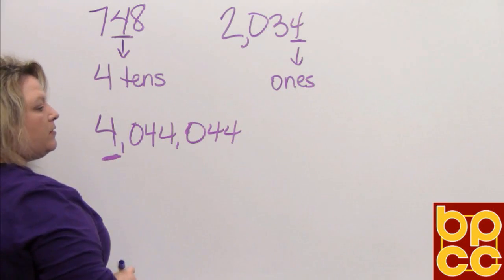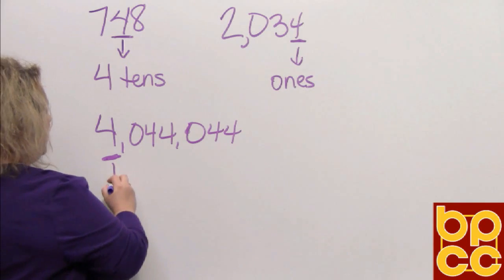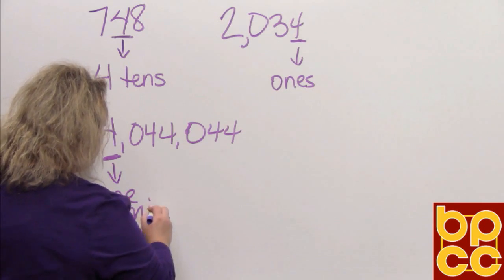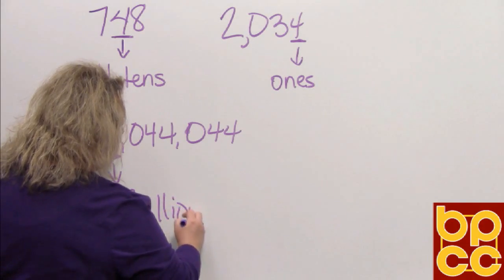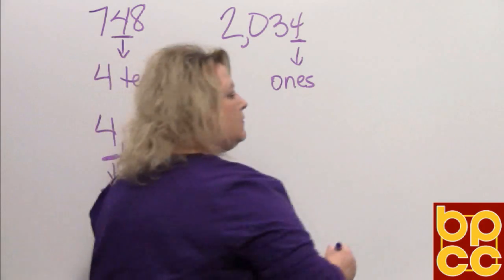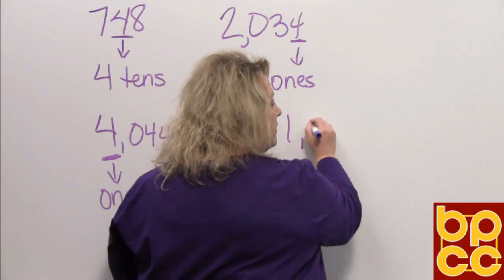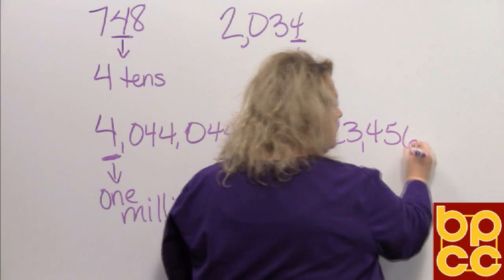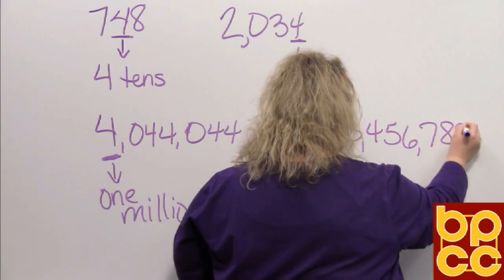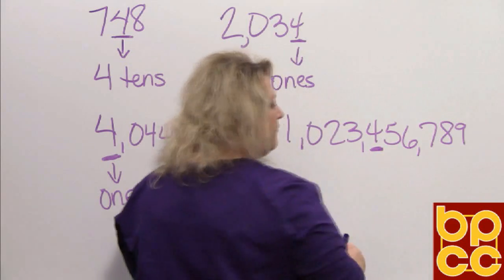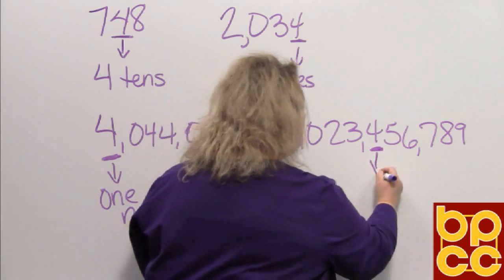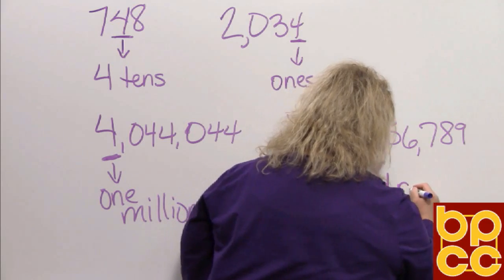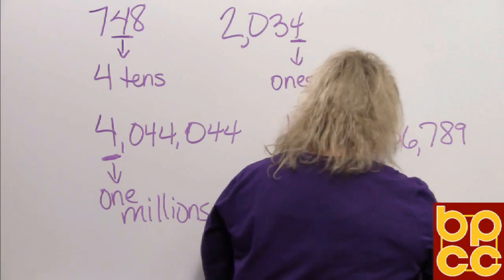And this next number, the digit that is underlined is in the one million place. And the next one, that four is in the hundred thousandths place.